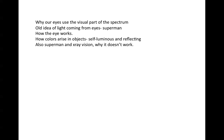Before we get to the fancy slides, I want to talk about a couple different questions that come up in this discussion. One is why our eyes use the visual part of the spectrum. There are several reasons for this. The main one is that the atmosphere transmits light in visible wavelengths, so sunlight reaches the surface of the Earth and makes it bright so that we can actually see things.